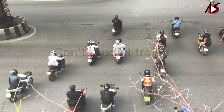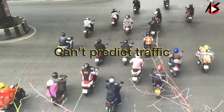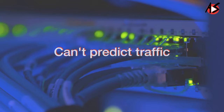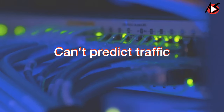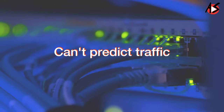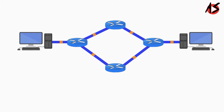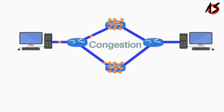We can't predict traffic on the road. Similarly, we can't predict traffic on computer networks. When the number of packets sent to the network is greater than the capacity of the network, it creates a blockage in the network called congestion.